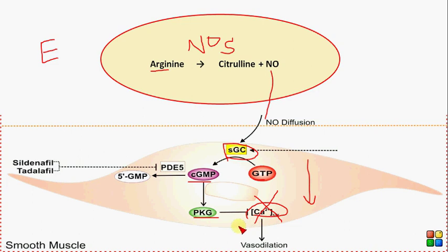Cyclic GMP is degraded by phosphodiesterase, which converts it into 5'-GMP. As a result, the stimulatory effect of cyclic GMP on protein kinase G is inhibited.